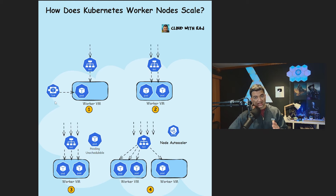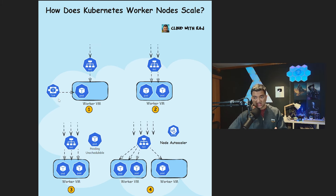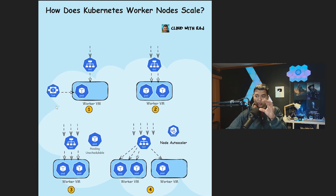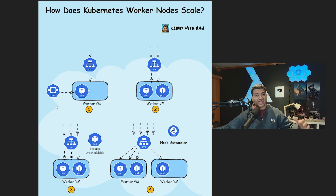The correct answer: first, you set up an HPA or Horizontal Pod Autoscaler. This HPA works on a set of pods in a deployment. If the average resource utilization across all pods crosses a certain threshold — such as CPU, memory, or other metrics — the HPA will increase the number of replicas. When it creates a new pod, the pod goes into a pending state and the kube-scheduler, running in the Kubernetes control plane, tries to find space for that pod in the existing running virtual machines.